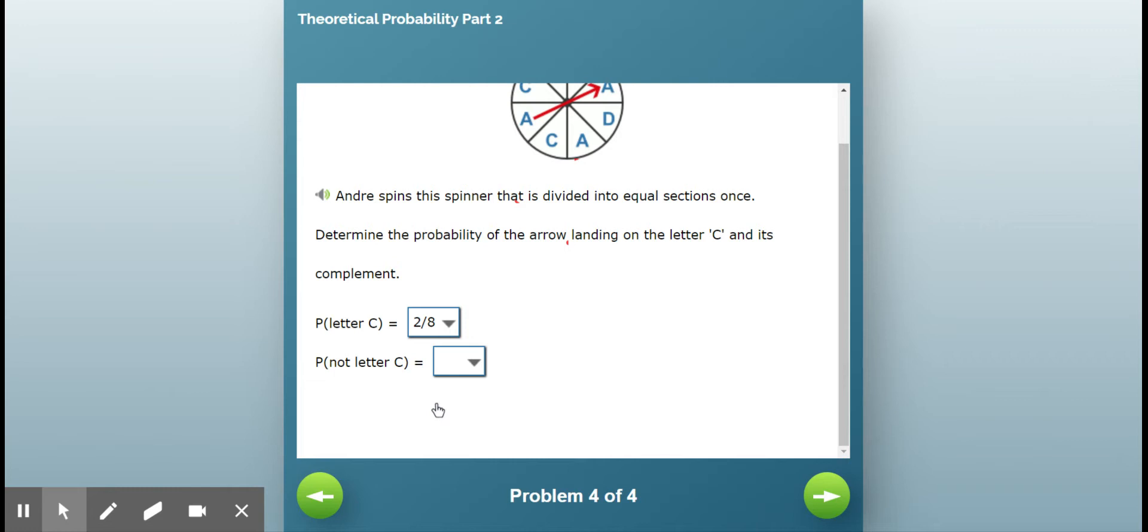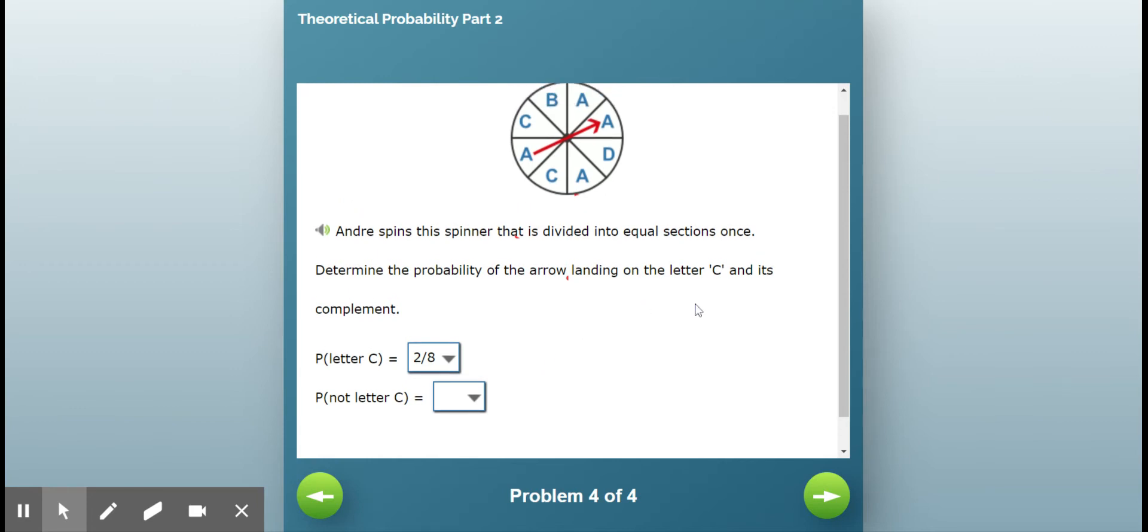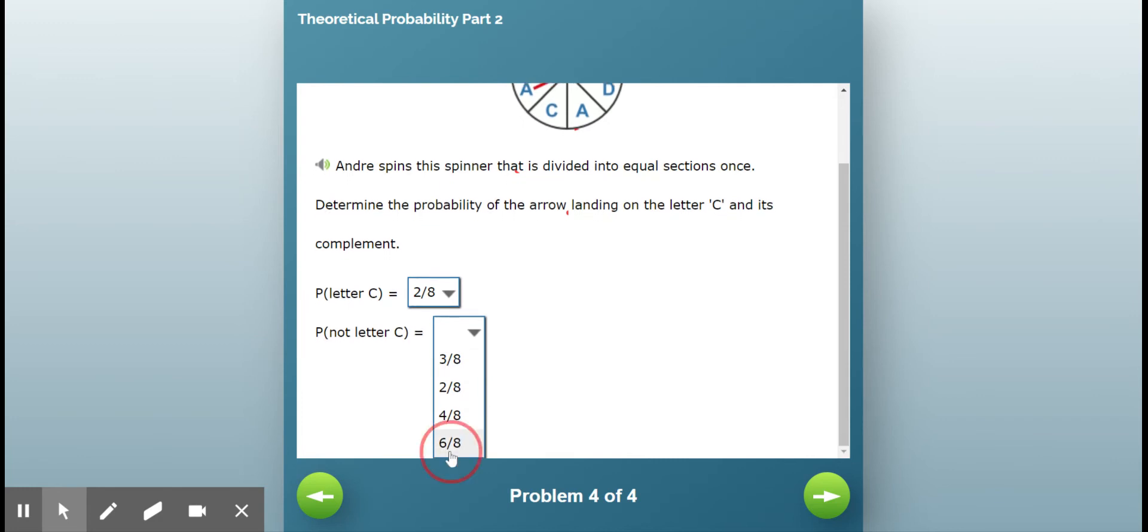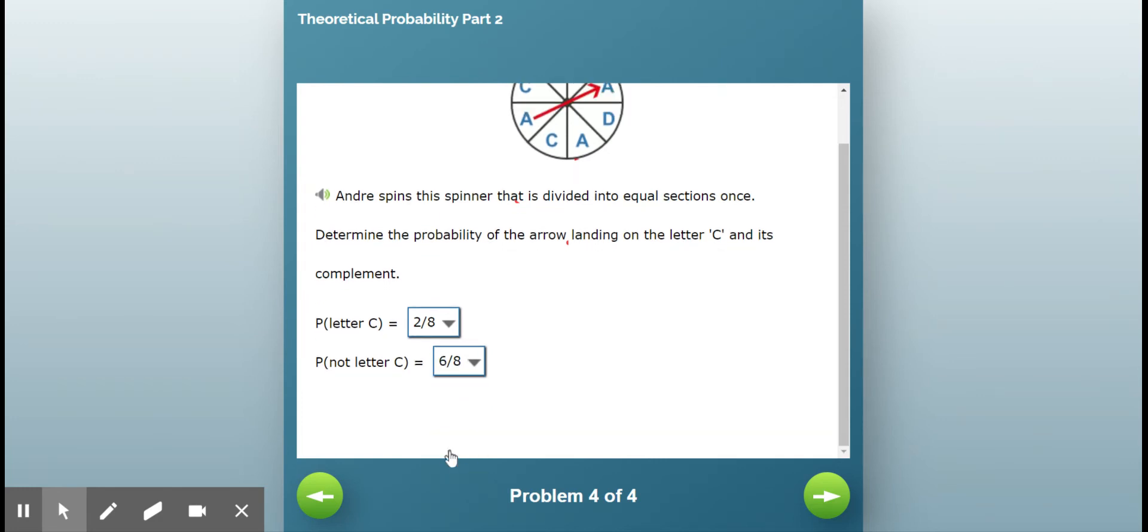Now, I would simplify that because two eighths is the same as one fourth, but we'll leave it like that for now. Then what is the probability that it will not land on the letter C? Well, two of them are C's. So that means six of them are not. So that would be six out of eight, which could also simplify to three fourths.